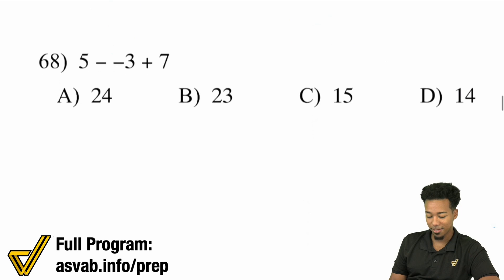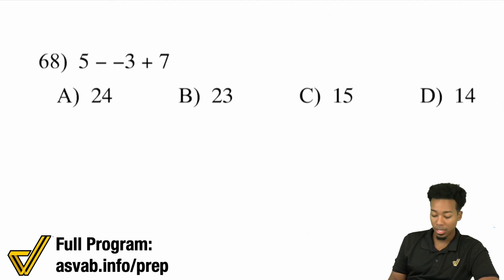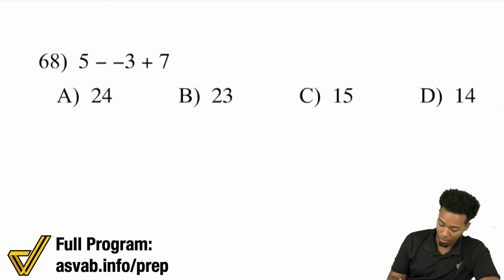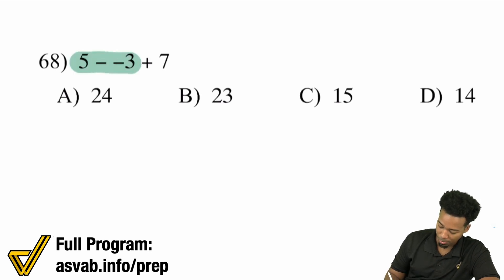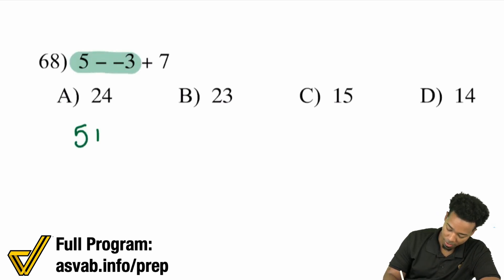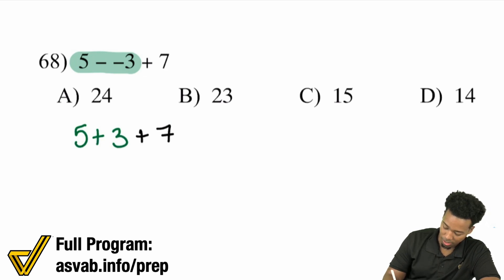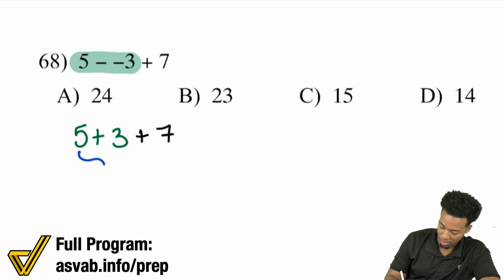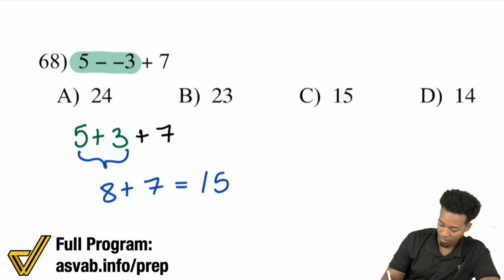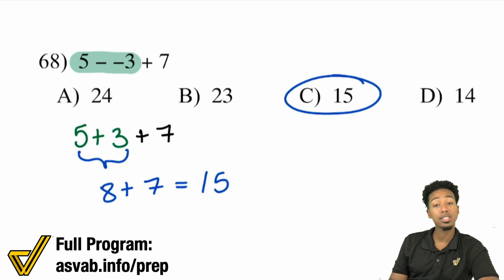Number 68: 5 minus negative 3 plus 7. Remember, subtracting a negative is the same thing as adding a positive. So we end up having 5 plus 3, and then we have the plus 7. 5 plus 3 gives us 8. 8 plus 7 gives us 15. And that's C.